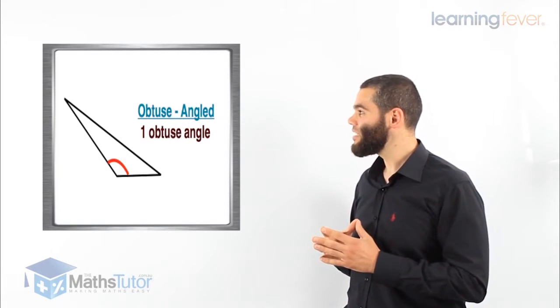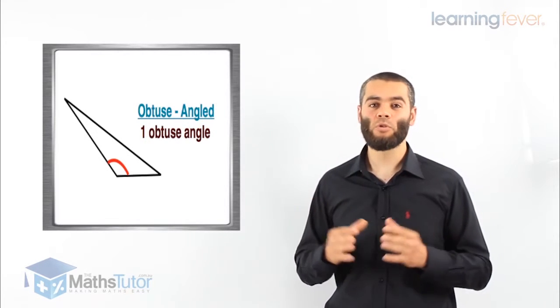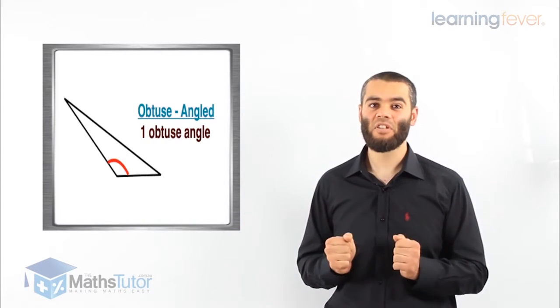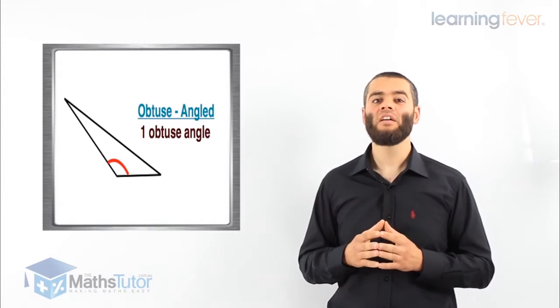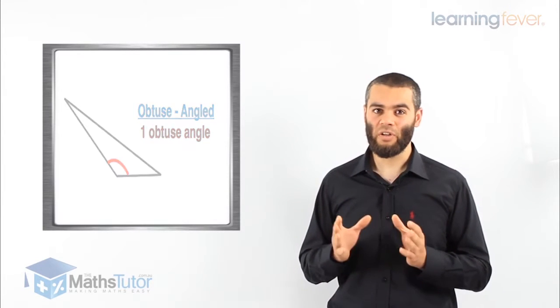And lastly, we have the obtuse angle triangle. As the name suggests, it has one obtuse angle which is larger than 90 degrees.